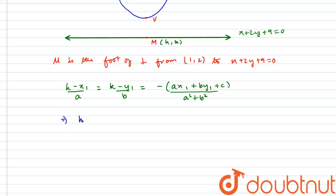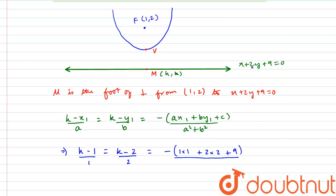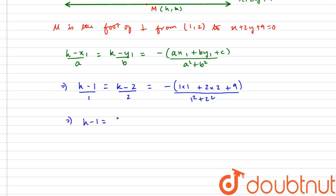Let us substitute the values. We have (h − x₁)/a, where x₁ = 1, y₁ = 2. So (h − 1)/1 = (k − 2)/2 = −(1×1 + 2×2 + 9)/(1² + 2²). The numerator is 1 + 4 + 9 = 14, wait — that is 1 + 4 = 5 plus 9 gives 14, and the denominator is 1 + 4 = 5. So this equals −14/5.